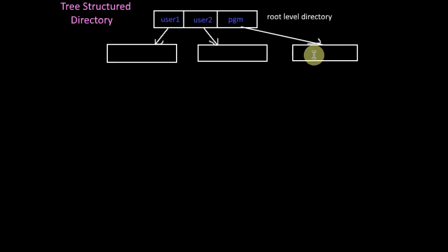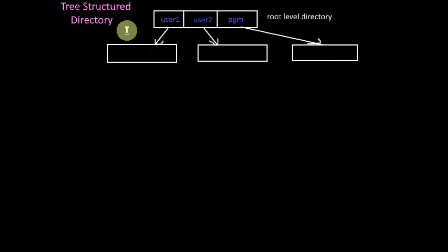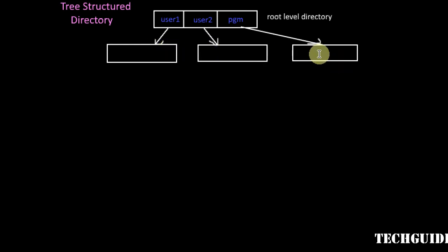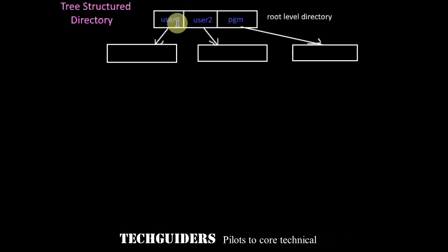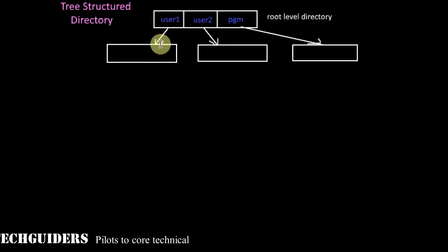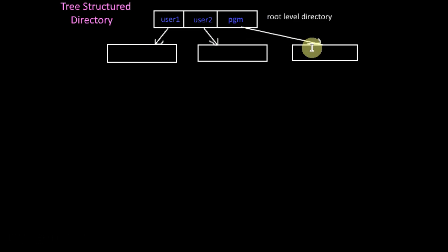Suppose at level 1, we have three subdirectories named user1, user2, and programs. Here, user1 and user2 are user-level directories. Each of these subdirectories will have an entry in the root level directory pointing to the corresponding subdirectories.